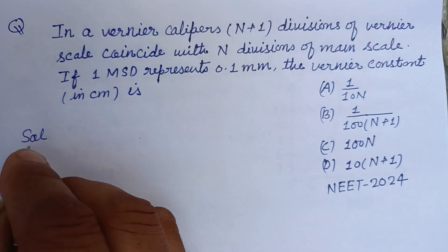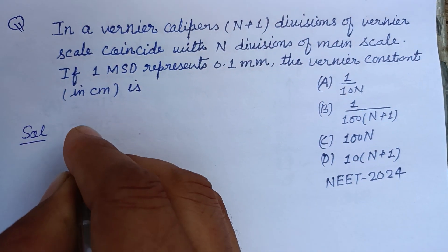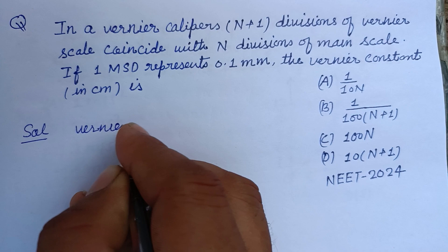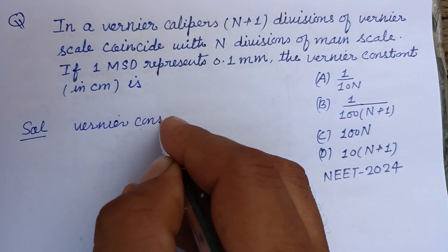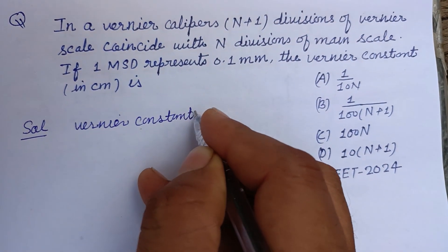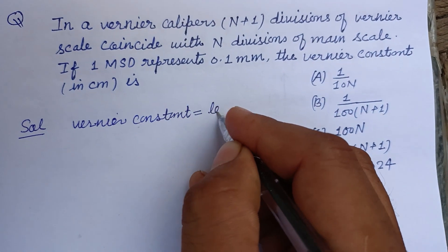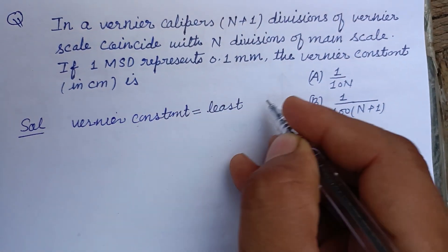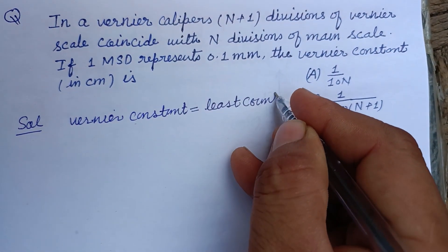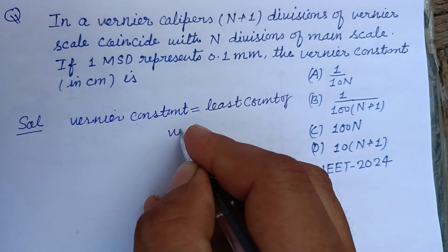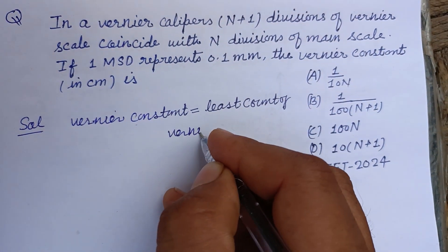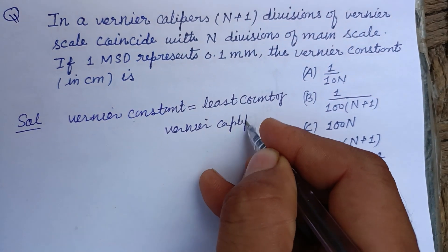So student, here Vernier constant is asked. Vernier constant is nothing but the least count of Vernier Calipers.